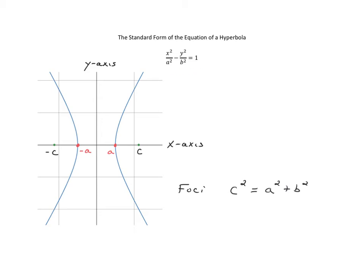The center is still at the point (0, 0). Another term to note: the axis that contains the foci is called the transverse axis, which in this case is the x-axis.